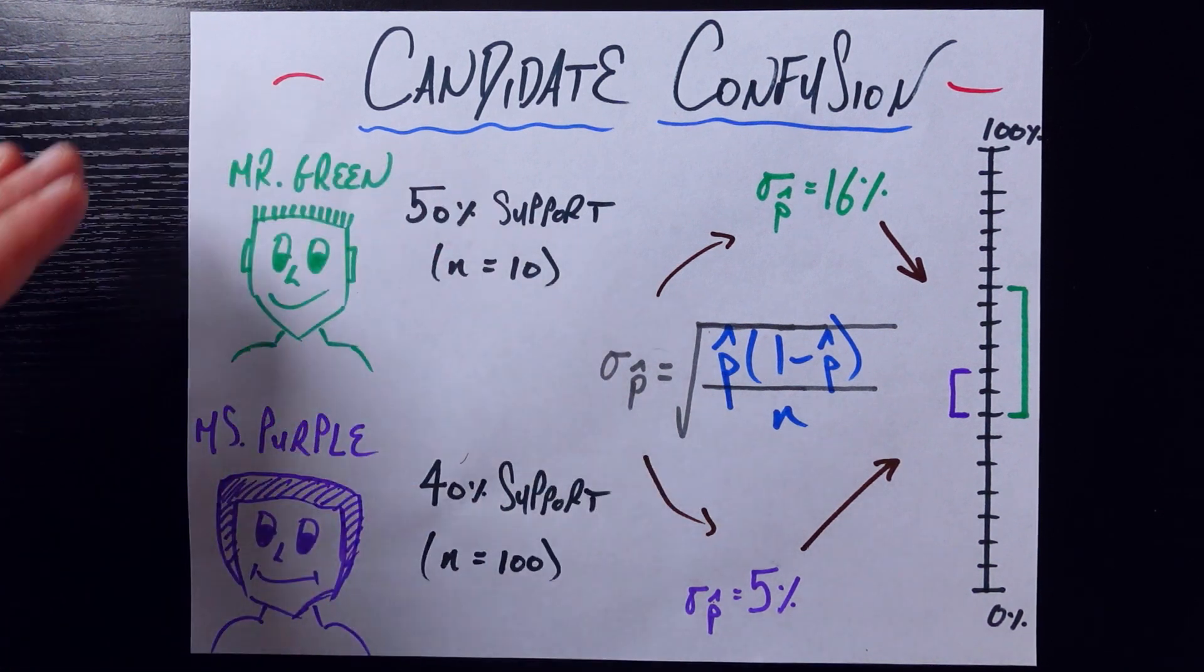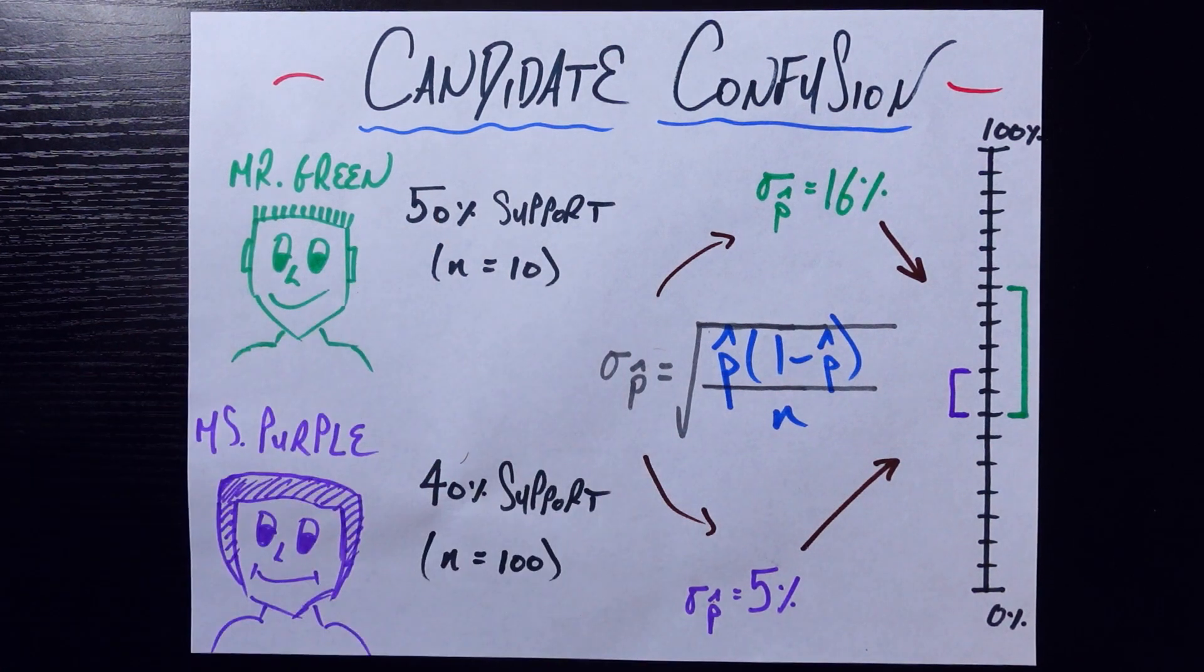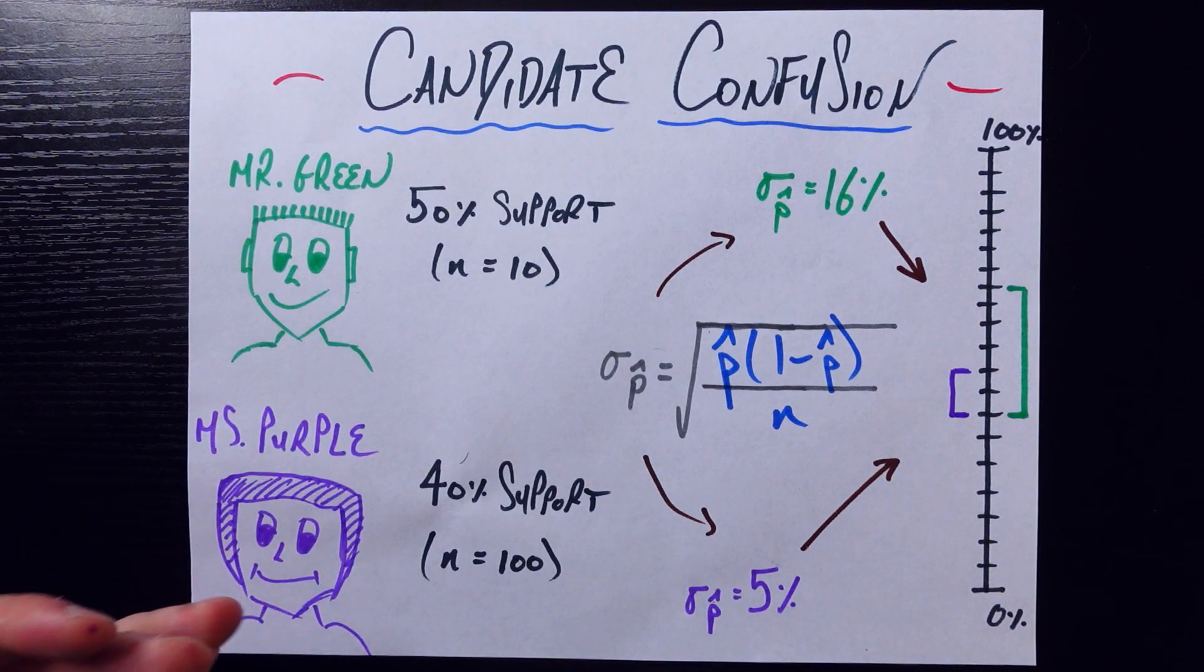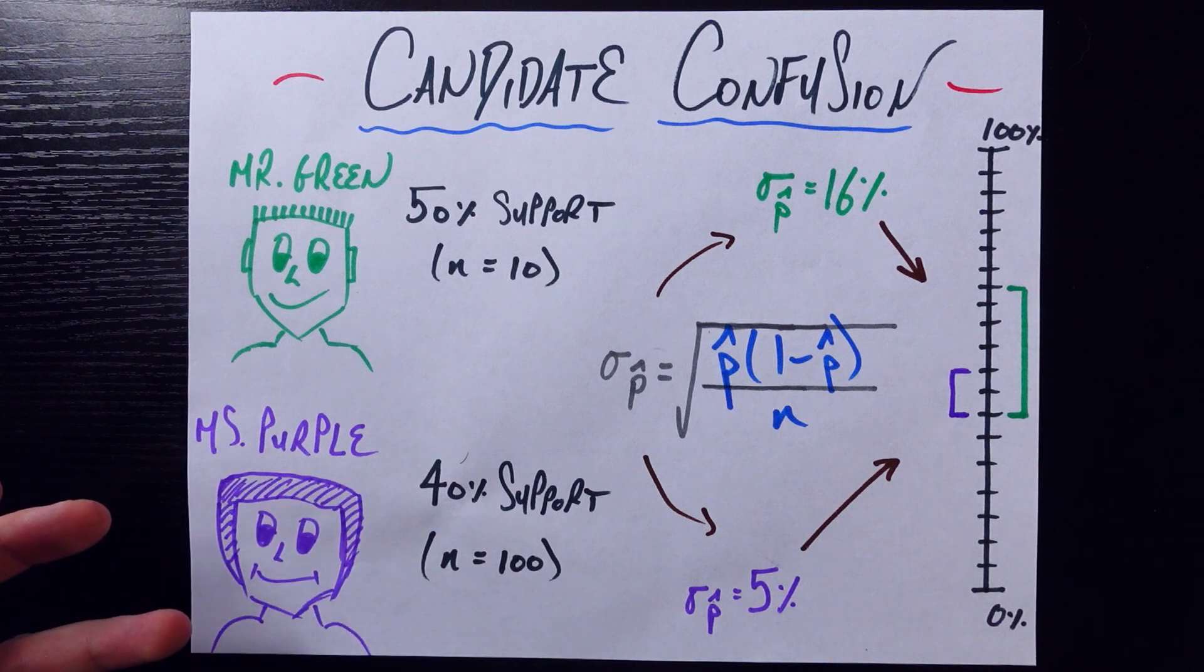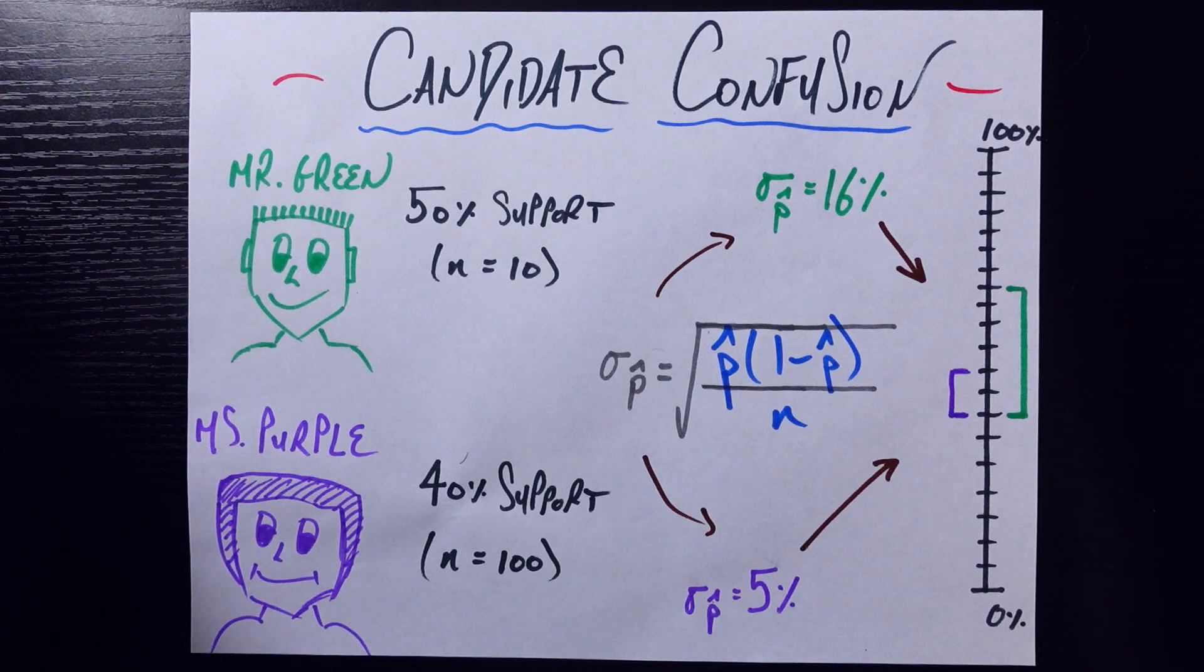Let's say that of the people who were surveyed and asked about Mr. Green, 50% support him. And of the people who were surveyed for Ms. Purple, 40% support her. Now, based on those numbers alone, it seems like Mr. Green is the obvious preferred candidate in town.